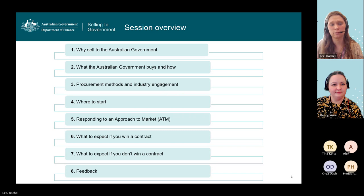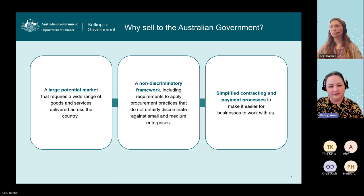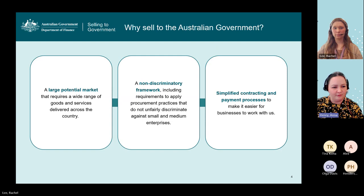So we'll start with why you might be interested in selling to the Australian Government. The Australian Government is a large potential market that requires a wide range of goods and services for delivery across the country. We have a non-discriminatory framework, which includes requirements to apply procurement practices that do not unfairly discriminate against small and medium enterprises. We also have simplified contracting and payment processes, making it easier for businesses to work with us.